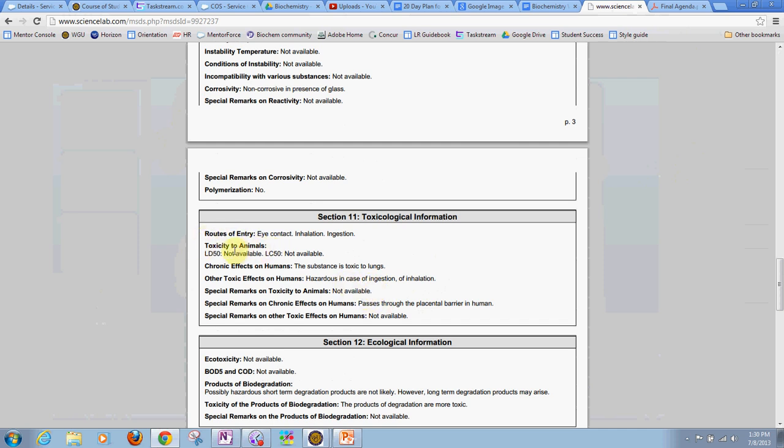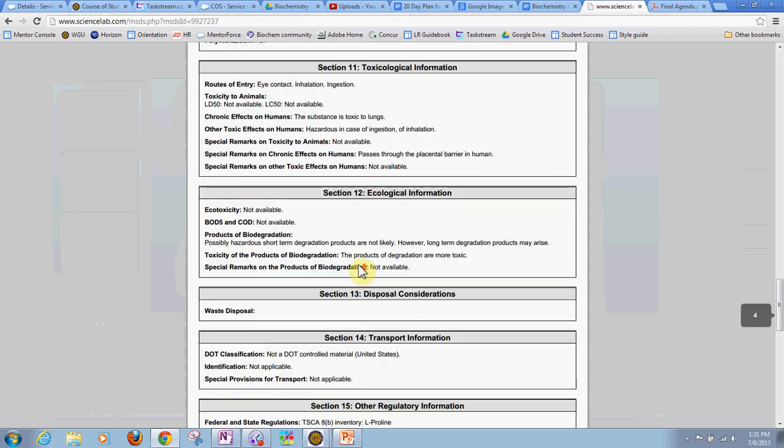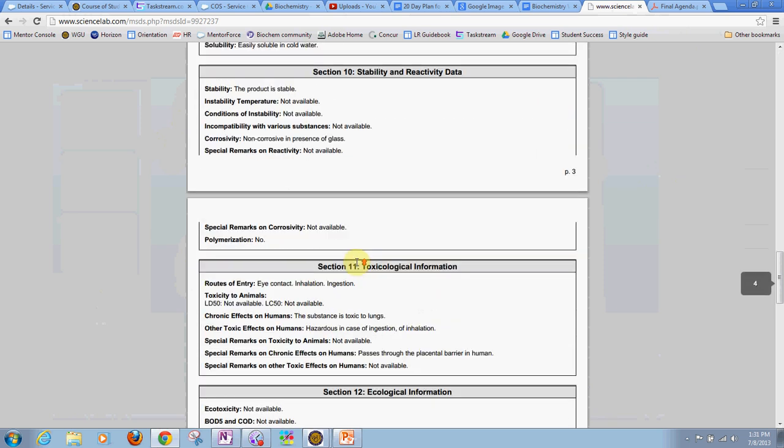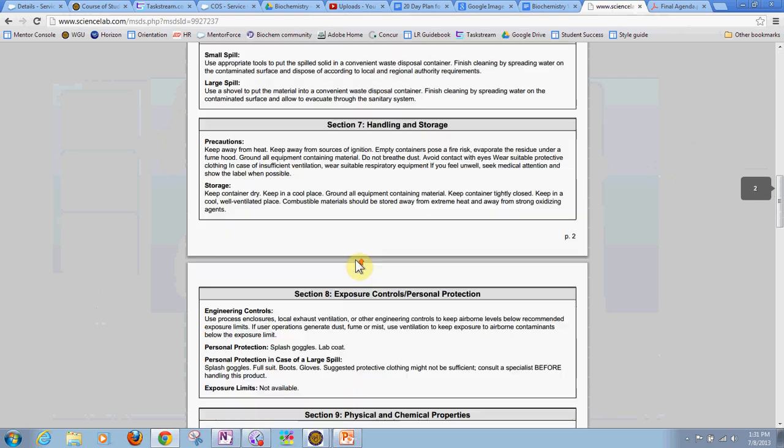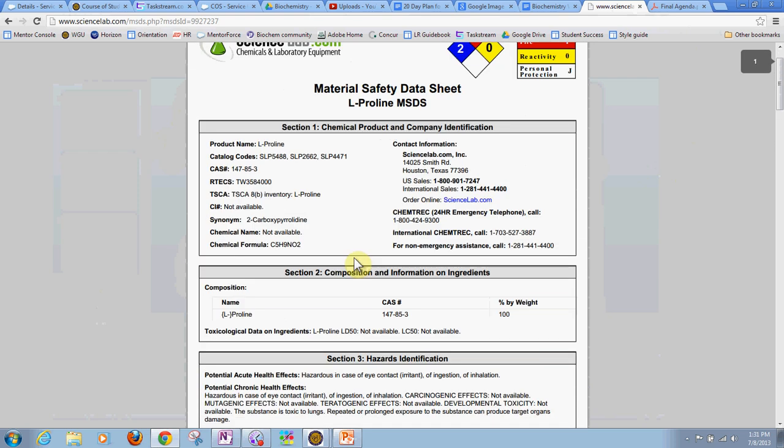When it says toxicity in animals, LD50 - LD50 means lethal dose. And LC50, this is lethal concentration. If you were to breathe it in, how lethal is it? Again, it says not available and not available, so it's relatively non-toxic. There's some other information down here as well, but that basically covers it. You can scroll through whatever MSDS you find and find some relevant chemical characteristics.